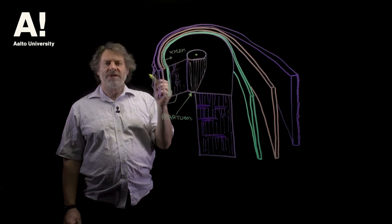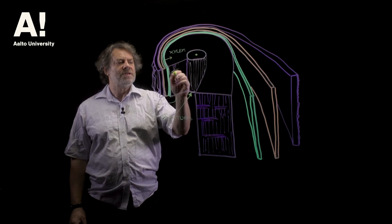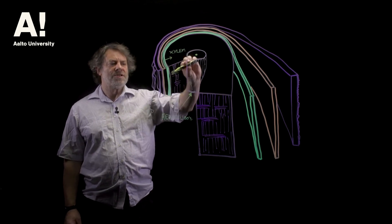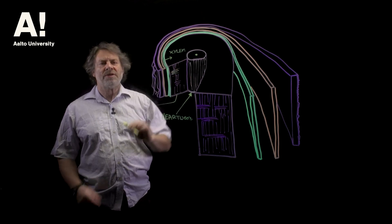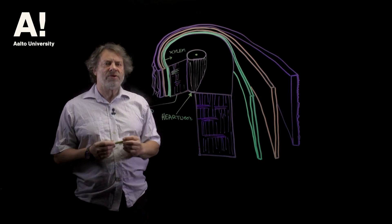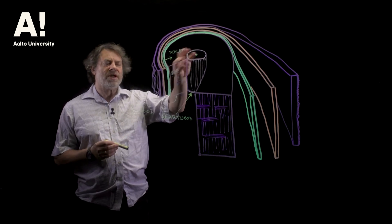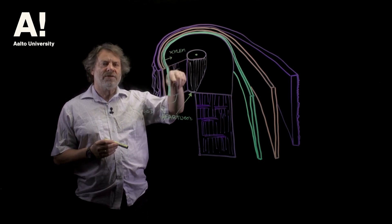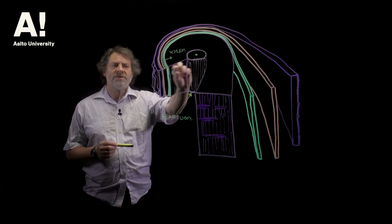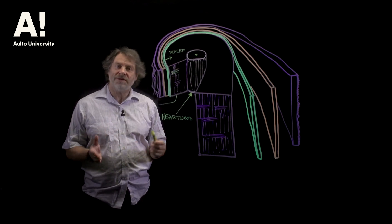The only part of the xylem tissue that's living are these cells here, which are referred to as parenchyma cells. In softwoods most of the parenchyma cells are horizontal. You do get some vertical but not very many in softwoods. In hardwoods you get a much more complex structure. You get vertical as well as horizontal parenchyma cells. So those are the only cells of wood that are alive.